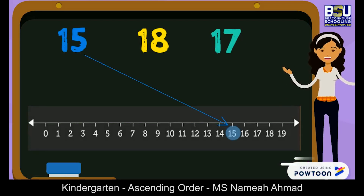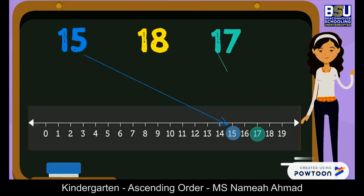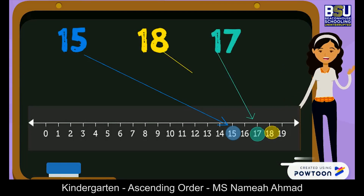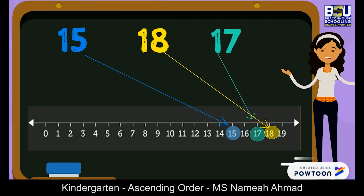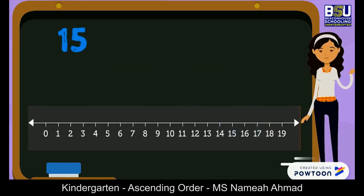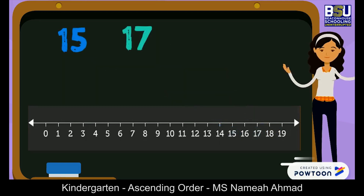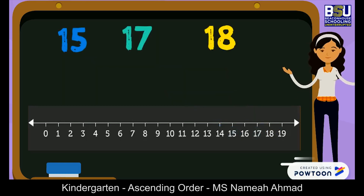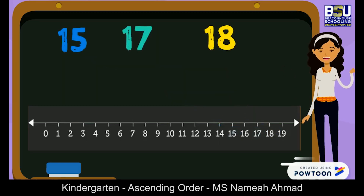We can use the number grid to sequence and order numbers. For example, these three numbers: 15, 17, and 18. So what is the correct sequence? 15, 17, 18.